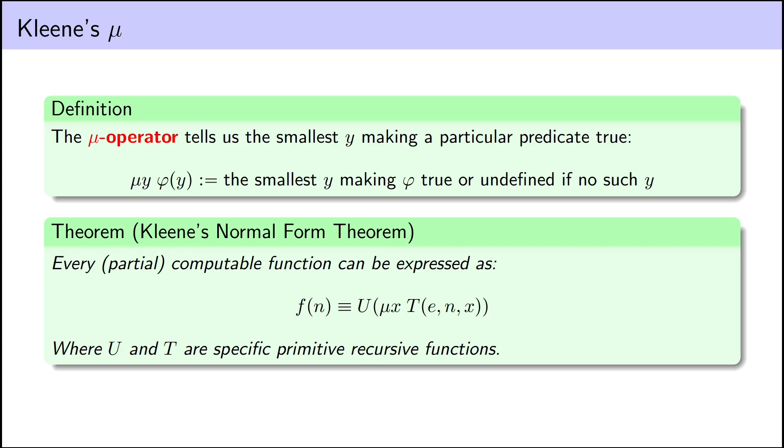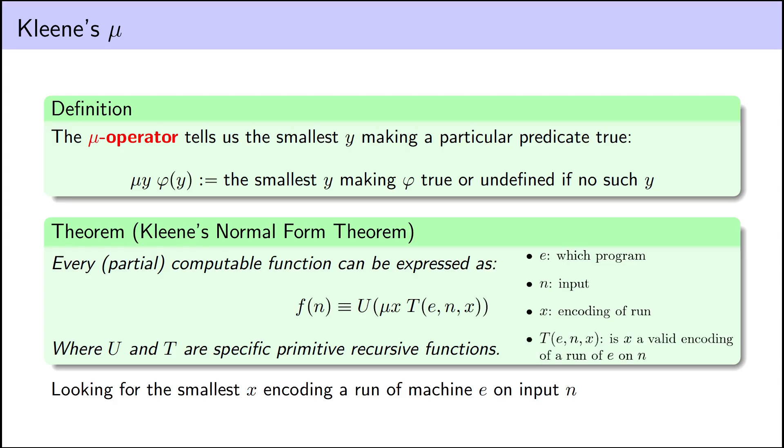This process is described in Kleene's Normal Form Theorem, which describes every computable function by looking for the smallest x encoding a run of the e-th Turing machine on input n. Specifically, first, on the inside, we have some primitive recursive predicate T that takes in a number e representing which computable function we want to calculate, so some sort of number representing our computer program, which Turing machine we want to emulate, and then n, which represents the input to the Turing machine, and x, and returns true if x is a representation of the run of our Turing machine on input n. We then look for the smallest such x, the smallest run, and there should only be one, if there are any, and finally apply a primitive recursive function u, which will extract the output from our complete run x.